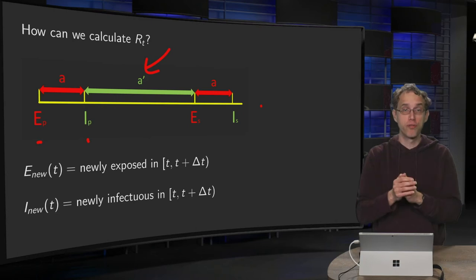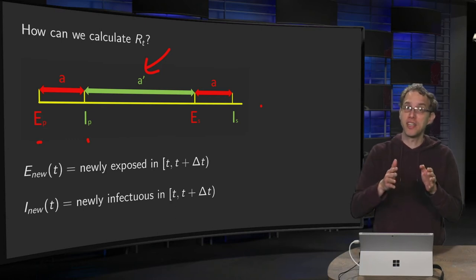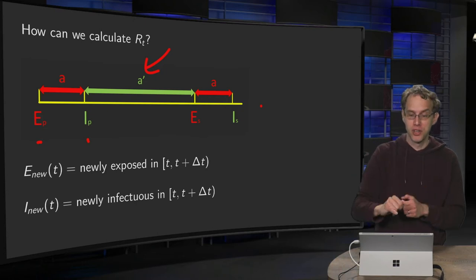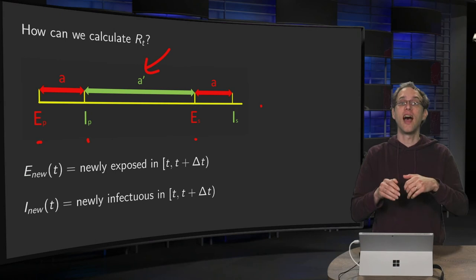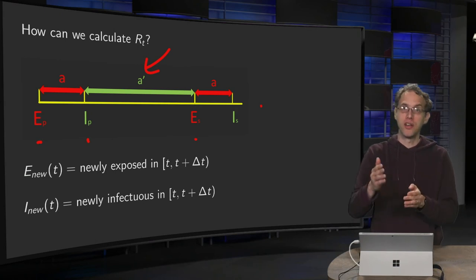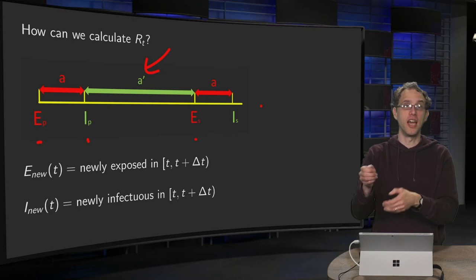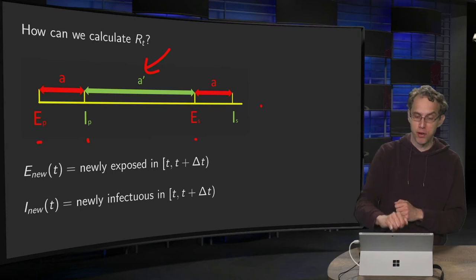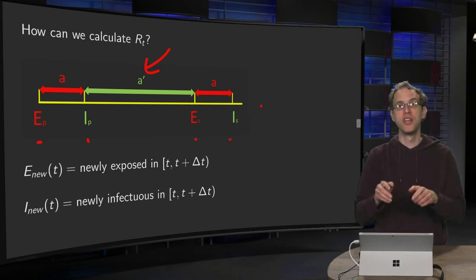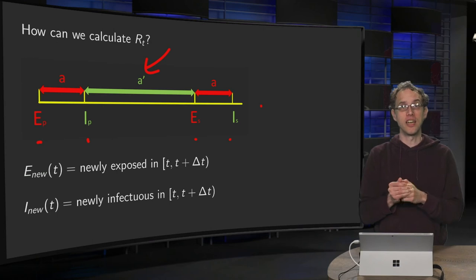So also drawn from some probably different probability distribution. So after a prime days, you generate another infection, you infect someone else. So you have a secondary exposed person. And then again, after a days, drawn from probability distribution, so this a may be some other number than the previous a, this secondary exposed becomes infectious and so on and so forth.